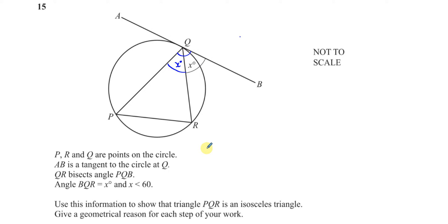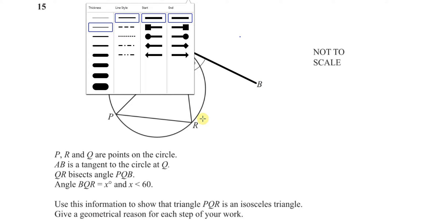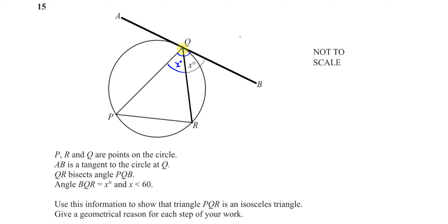It's pretty simple from here. Because basically, this tangent here makes an angle with the chord. This tangent AB, which is a tangent to the circle at Q, makes an angle with the chord QR, which is angle X. Now we have the alternate segment theorem, which states that an angle made between a tangent and a chord is equal to the angle on the opposite side of the circle, on the alternate segment.